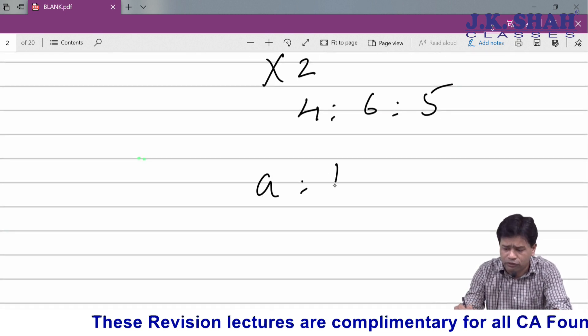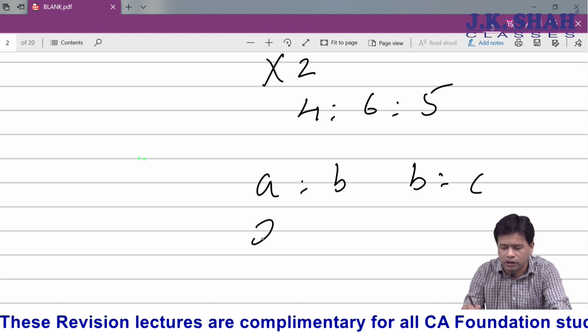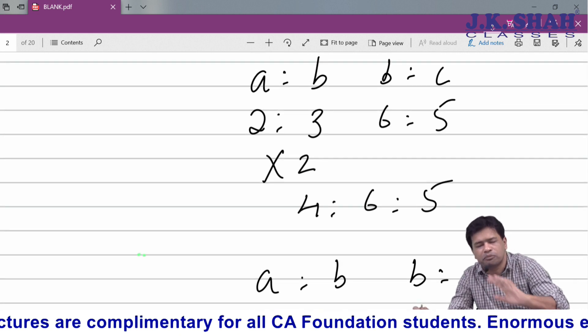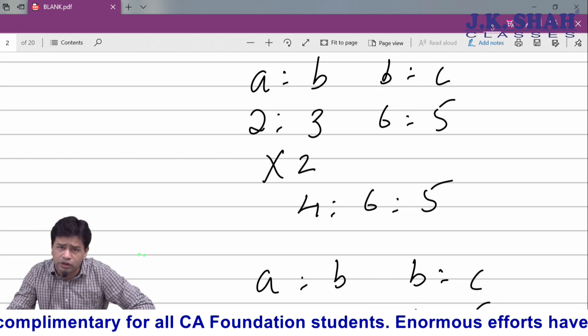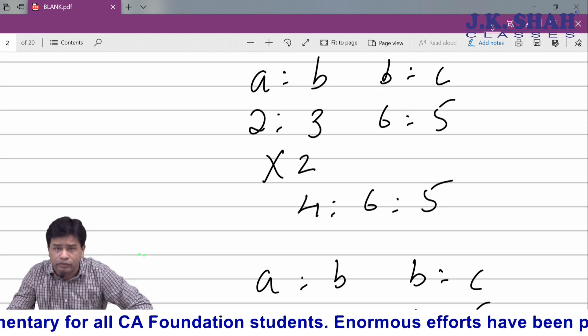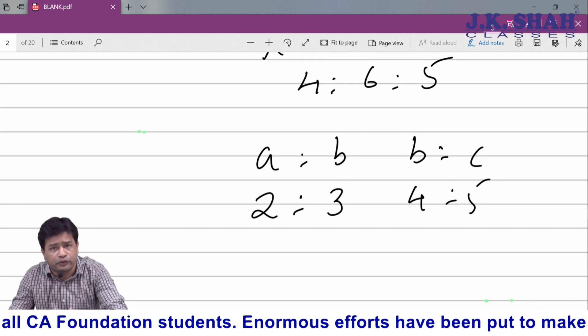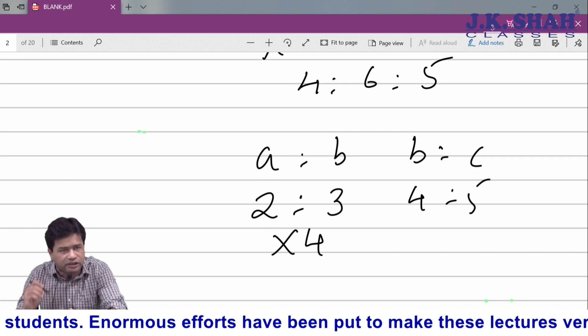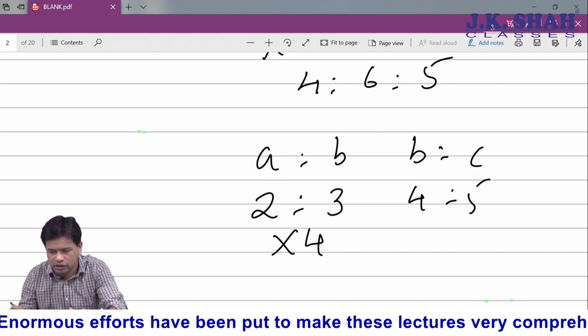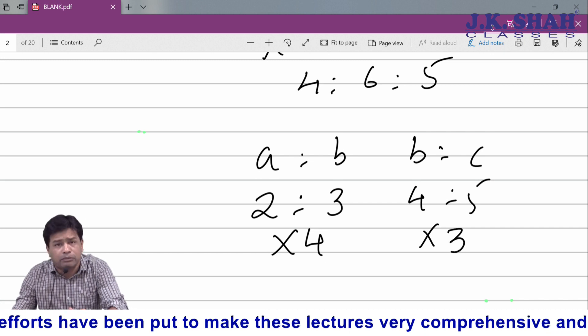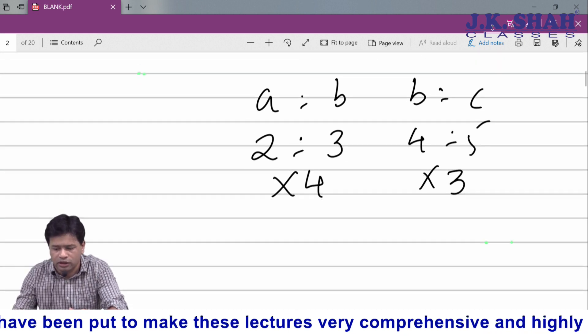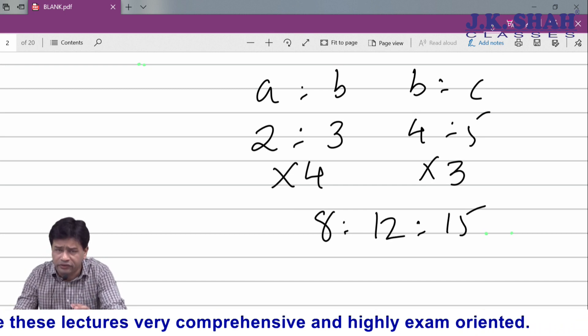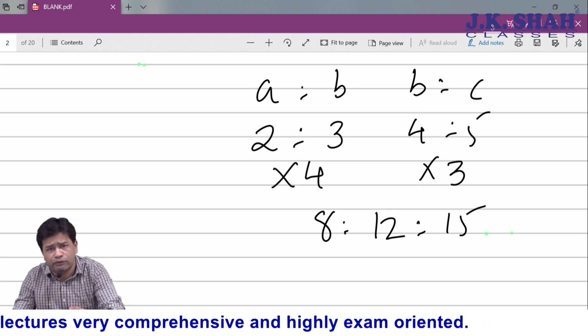Sometimes the common alphabet does not have the same number - 2 is to 3 or 4 is to 5. If I compare it to our previous example, it was possible to convert 3 into 6, but here it is not possible to convert 3 into 4. So I cross multiply: I take the other value of b (that is 4) and multiply by the first two terms, then take the first value of b (that is 3) and multiply by the next two terms. So I get 8 is to 12 is to 15. In joint ratio, remember the common alphabet must have the same number.